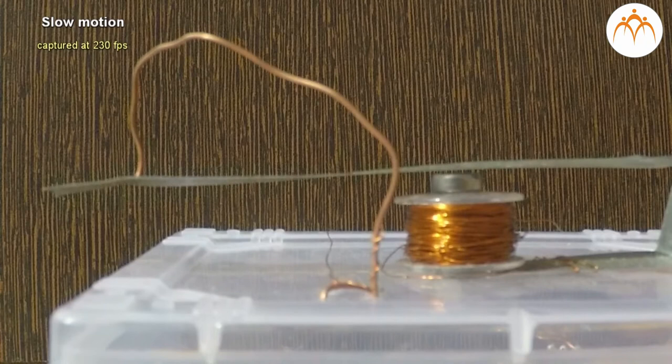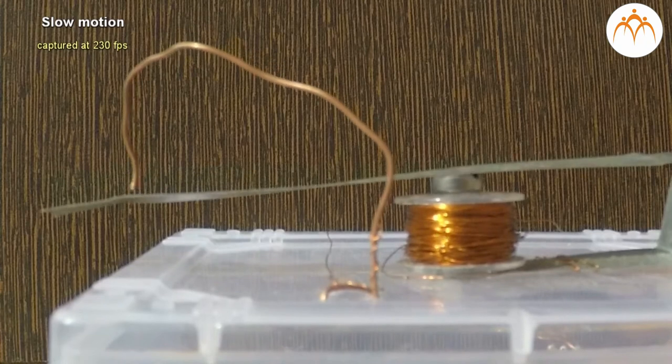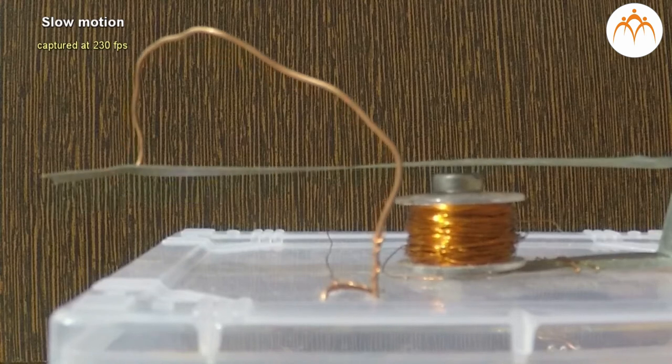This action moves the metal strip away from the copper wire and breaks the circuit. Due to tension present in the strip, it returns back to the copper wire.